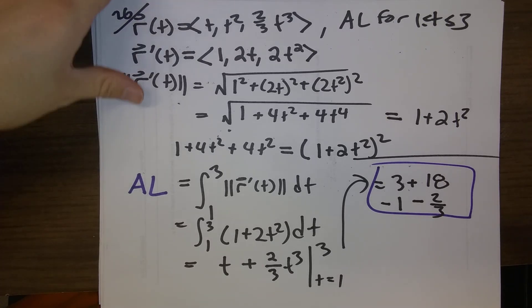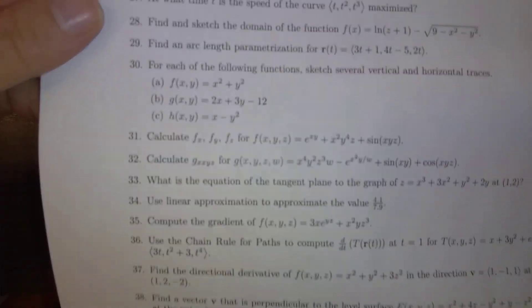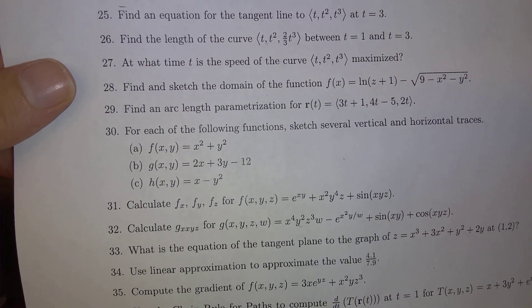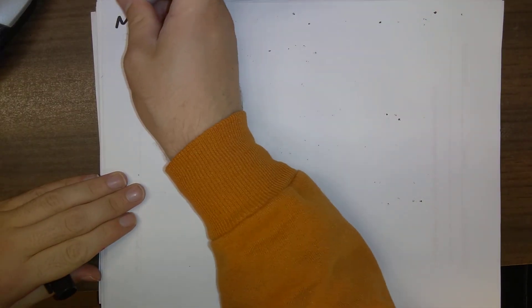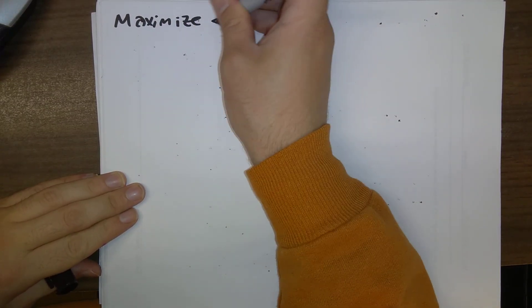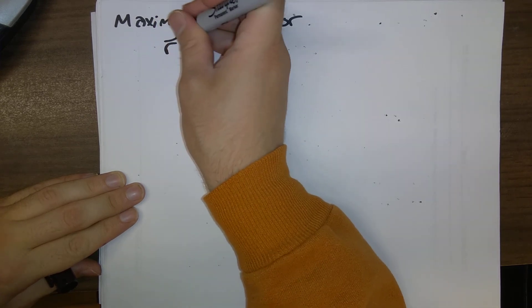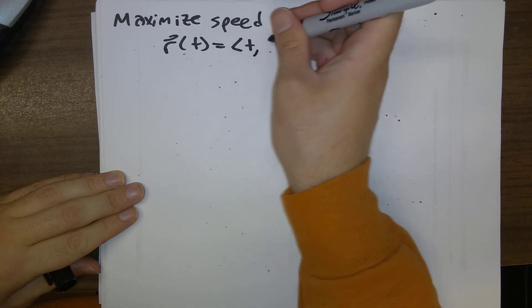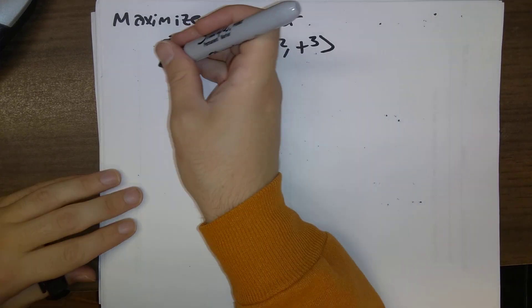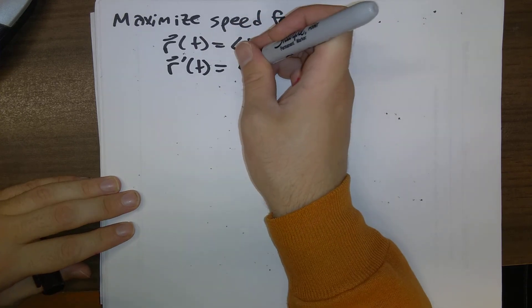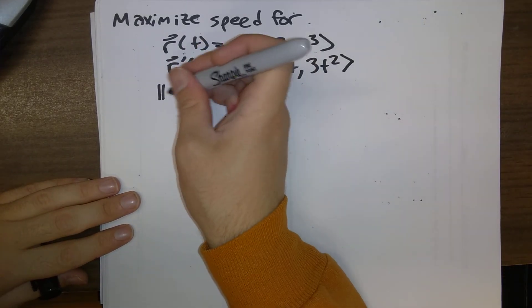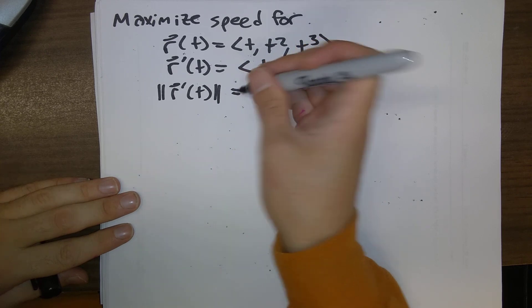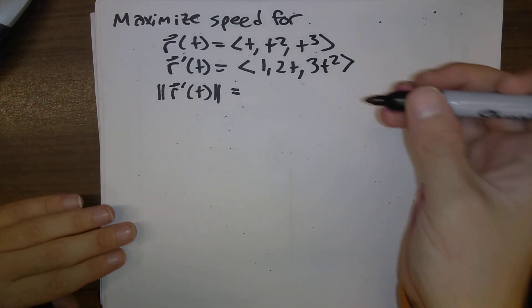One more problem here, problem 13 of this type. At what time t is the speed of the curve, t, t squared, t cubed, maximized? We want to maximize speed for r of t is t, t squared, t cubed. To find speed, we need the velocity. We actually did this velocity earlier in the video. So, there's the velocity. And here comes the speed.